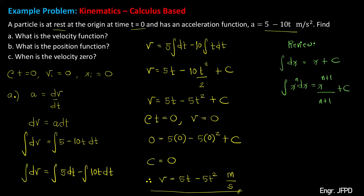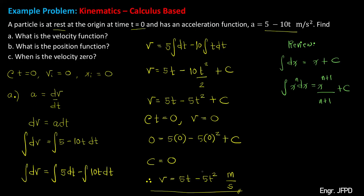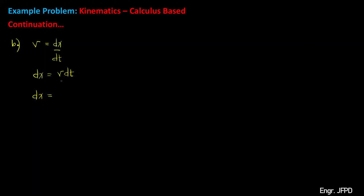Now let's answer part b: what is the position function? For the position function, note that we can solve for velocity v as the derivative of position x with respect to time t. Solving this equation gives dx equals the product of v and dt. We already expressed velocity as a function of time t, which is v equals 5t minus 5t squared. Substituting, this becomes 5t minus 5t squared dt.